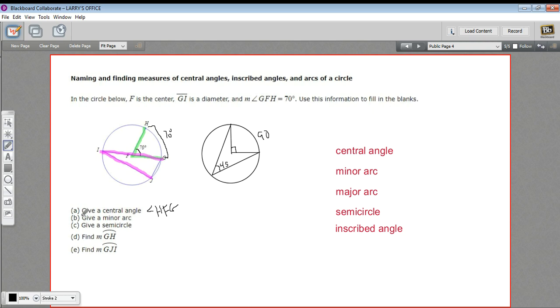Okay. B says give a minor arc. And we could choose any arc here that we wanted to, as long as it was the smaller part of the circle, and we name it with two letters. So we could say HI, for example, or HG, or GJ, or IJ. I'm just going to use HI. And when we write an arc, we put the letters, and we put a little arc symbol over it. So there's a minor arc.